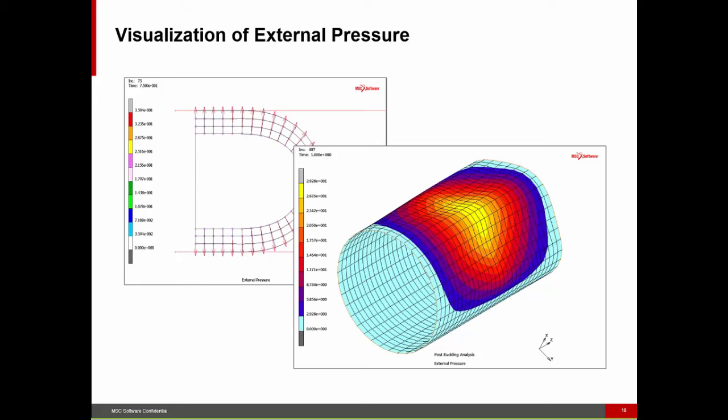A new capability associated with both MARC and MENTAT is the ability to visualize applied pressures. If we apply a pressure on a body — here defined as a double cosine function using an equation — previously we could only get equivalent nodal loads out of MARC, which were a function of both the applied pressure and the mesh size. Now you can see the true pressure applied on the system. This is very useful for fluid-solid interaction where pressures come from a CFD program.